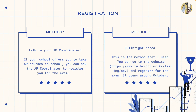Next is how to register. The first method is asking your AP coordinator at your school. If your school offers the AP classes you want, you can ask the AP coordinator to register you for the exam. The second method — which is what I actually did — is going to Fulbright Korea, an educational institution in Korea specialized for international schools. You can go to the website: https://www.fulbright.org.korea/testing/AP and register for the exam there. The first registration season opens around October, and the next one opens in November or December.